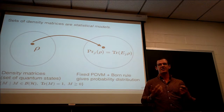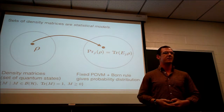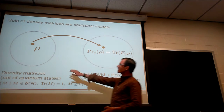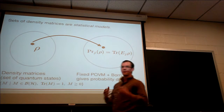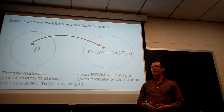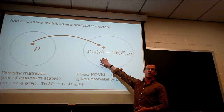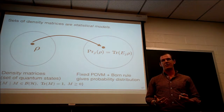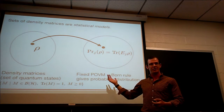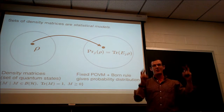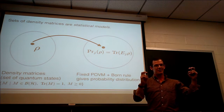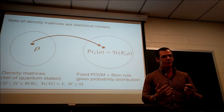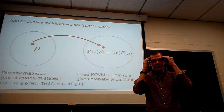If you asked a statistician what a density matrix is, they would tell you it is a statistical model. Why? Suppose I have some density matrix rho. From the Born rule, if I have some POVM that I'm measuring, then that density matrix maps onto a probability distribution over those measurement outcomes. Since different density matrices give rise to different probability distributions, these probability distributions form a parametrized family — a statistical model. So in this talk, when I use the word 'model,' think of sets of density matrices.